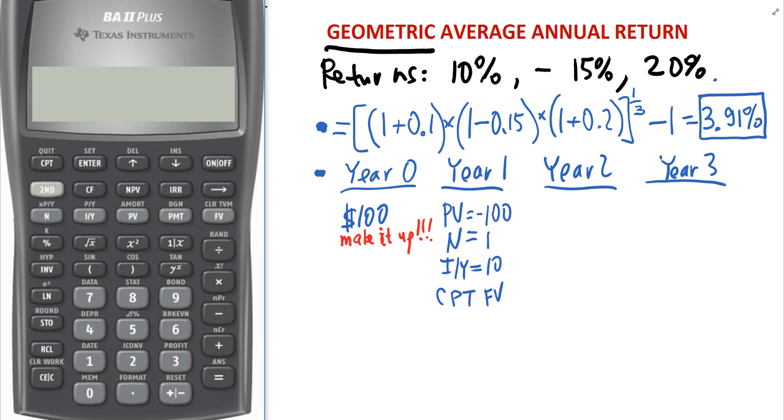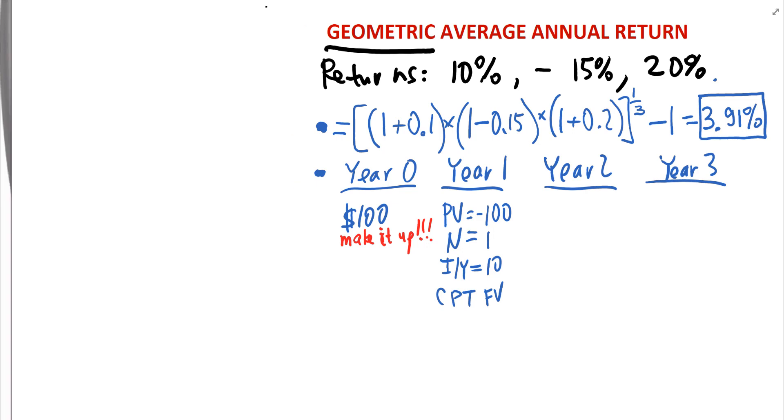So let me bring up the financial calculator. Let's turn it on. 100 negative is our present value. 1 is our N. 10 is our IY. And we are computing future value. 110. Just like we expected. Okay. So 110.